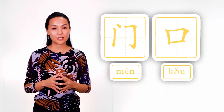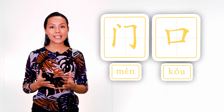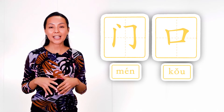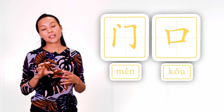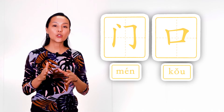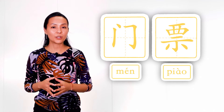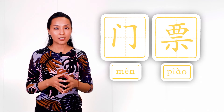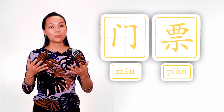Now let's see examples where this radical is used as a separate word. The first is 门口 (mén kǒu), meaning 'entrance' — 门 means door or gates, and 口 means mouth, used here as a symbol of a hole through which we enter. The second is 门票 (mén piào), meaning 'ticket' — 门 is door and 票 (piào) is ticket.